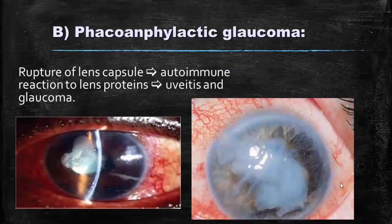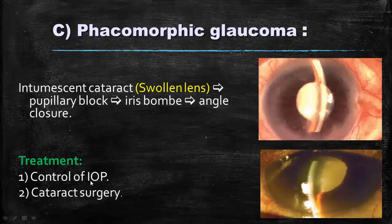The second form of lens-induced glaucoma is phacoanaphylactic glaucoma, caused by rupture of the lens capsule due to trauma or surgery. The lens material leads to a severe autoimmune reaction to lens proteins, causing uveitis and secondary elevation of intraocular pressure. We can notice the shallow anterior chamber caused by the glaucoma, the opened lens capsule, and this inflammatory reaction in the form of keratic precipitates and uveitis. The third form is phacomorphic glaucoma, in which the lens is intumescent, leading to pupillary block and angle closure — we can notice the shallow anterior chamber here. Treatment is mainly by controlling the intraocular pressure medically and performing cataract surgery.